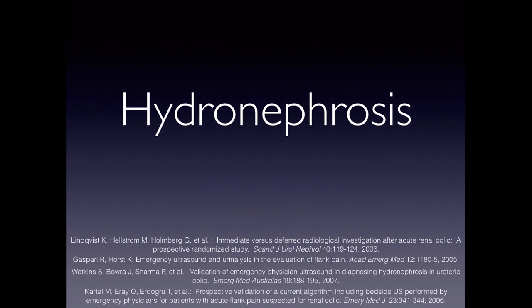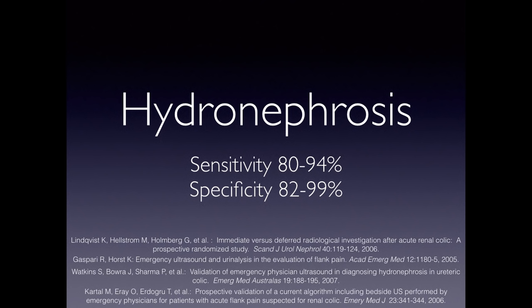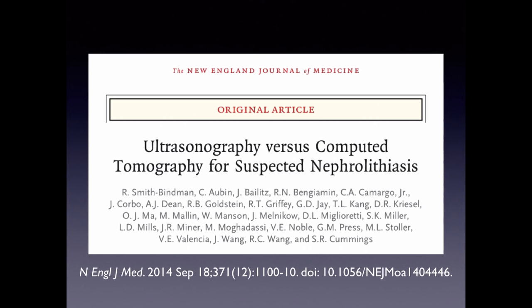The sensitivity and specificity of renal ultrasound in trained users is very good — 80 to 94 percent sensitivity and 82 to 99 percent specificity. A recent 2014 study in the New England Journal of Medicine discussed ultrasound versus CT for this indication.